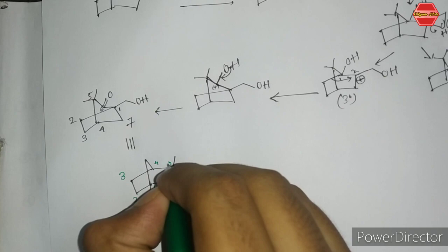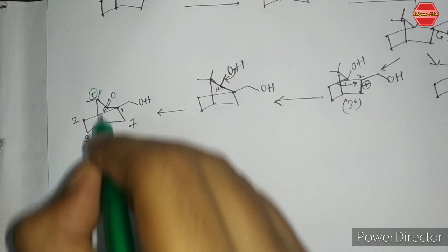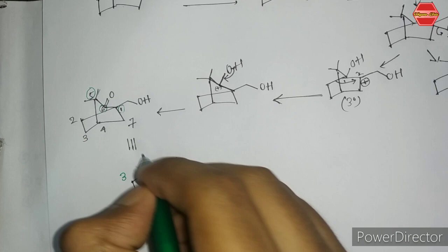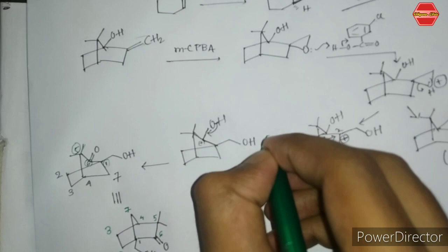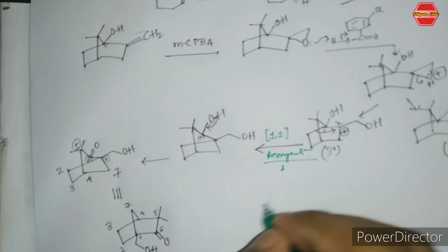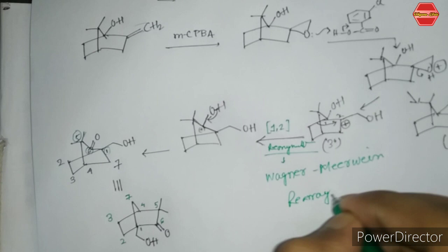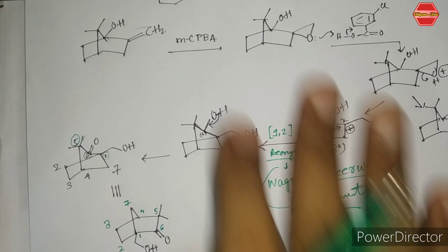Continuing the numbering: position one, two, three, four, five — where you have two methyl groups — six, and seven. This rearrangement is a 1,2-rearrangement, also called the Wagner-Meerwein rearrangement.